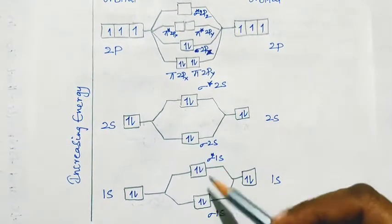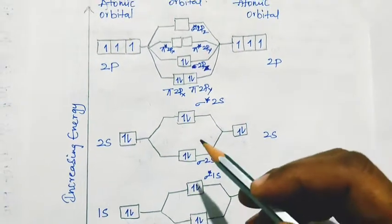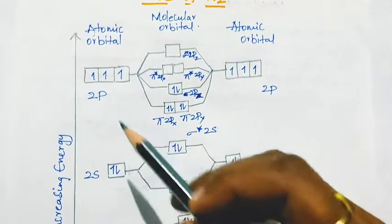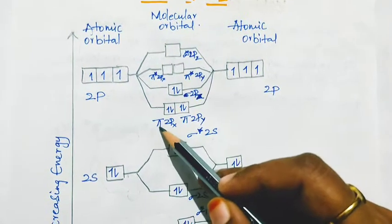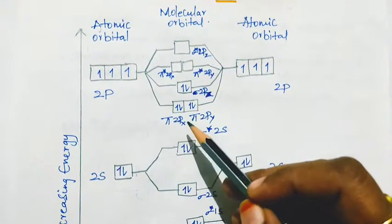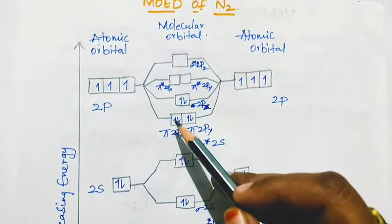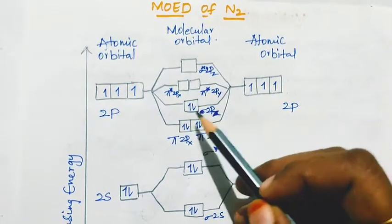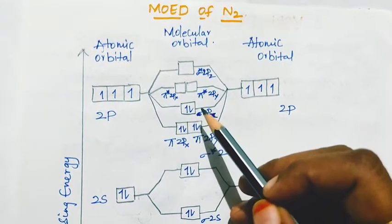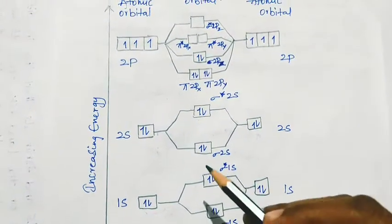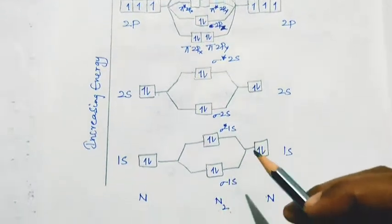So totally 8 electrons have been filled. The remaining 6 electrons will be occupied in the p orbitals. First, pi 2px and pi 2py, which are of the same energy level — these are bonding orbitals — filled with 4 electrons. The remaining 2 are filled in sigma 2pz, also a bonding molecular orbital. Totally all 14 electrons are now filled in bonding and antibonding orbitals.